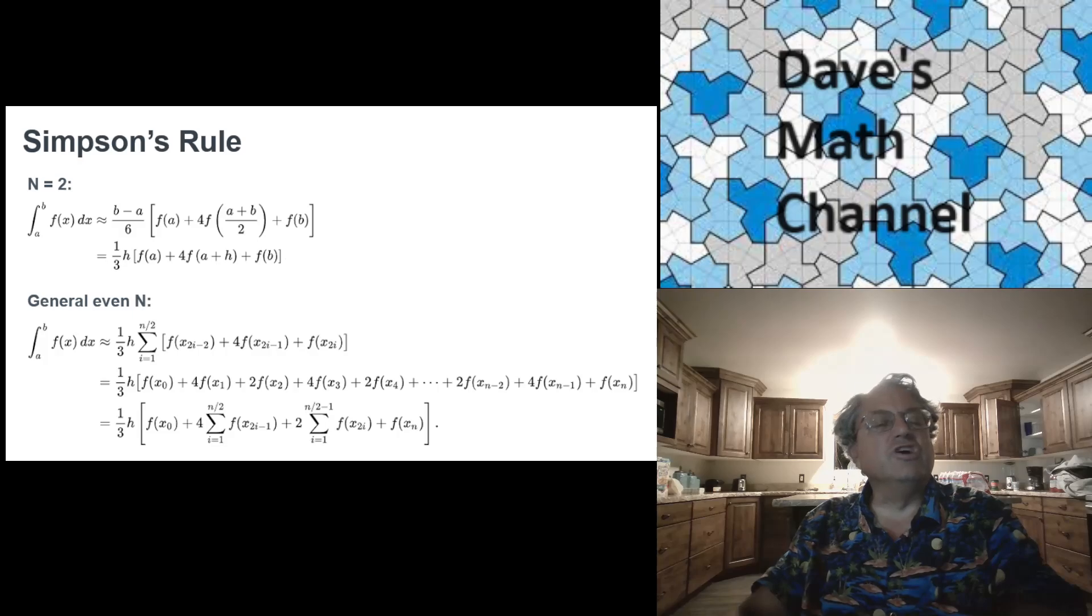You can write 1 third h, where h is just the width of the interval. But how would you generalize this? Well, you generalize it just by, the thing you always multiply by is 1 third h, where h is the width of the interval. And if you like, that's b minus a over 3n, where n is the number of intervals.